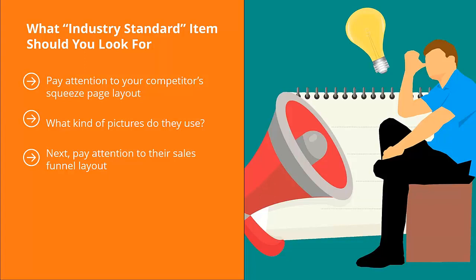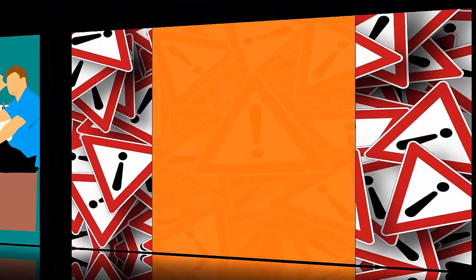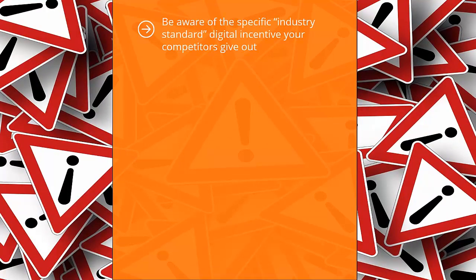Be aware of how competitors take prospects through the sales process, because their ultimate goal is to get list members to buy something. Try to figure out how their sales funnel is laid out and how it seeks to convert list members. Also pay attention to the freebies or incentives competitors offer to get people to sign up — do they use cheat sheets, short reports, full books, special videos, or insider information? Be aware of the specific industry standard digital incentive your competitors give out, because you are going to have to offer something similar to start.